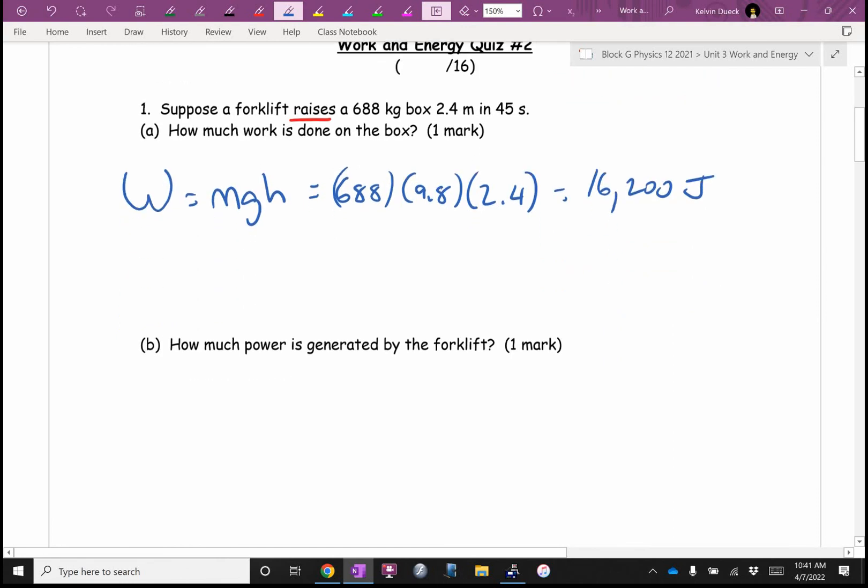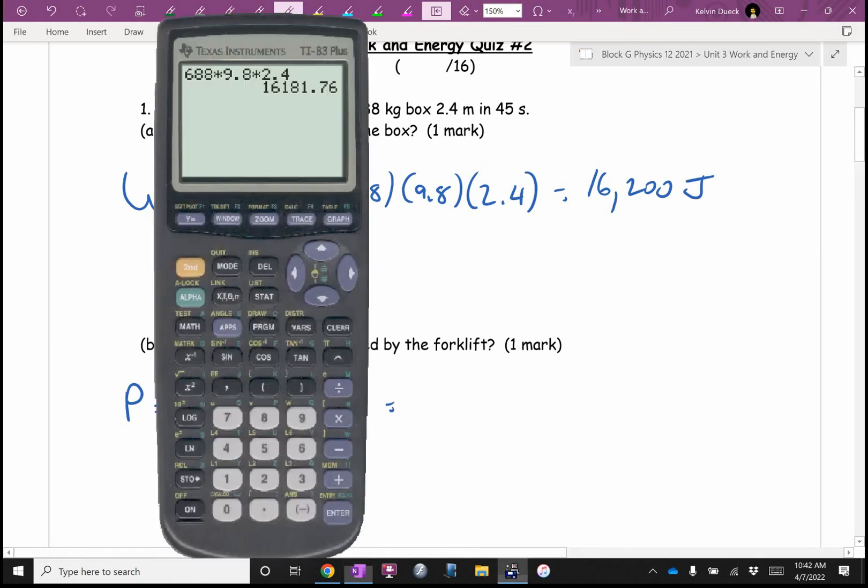B says how much power? Power is work over time. So I'm going to write 16,200, but I'm using my answer button divided by 45.